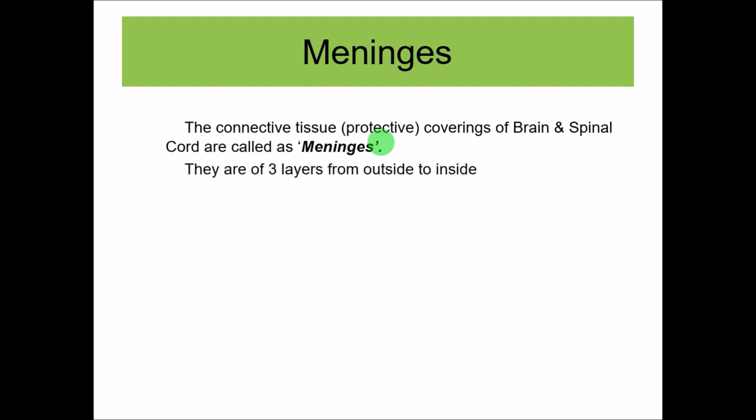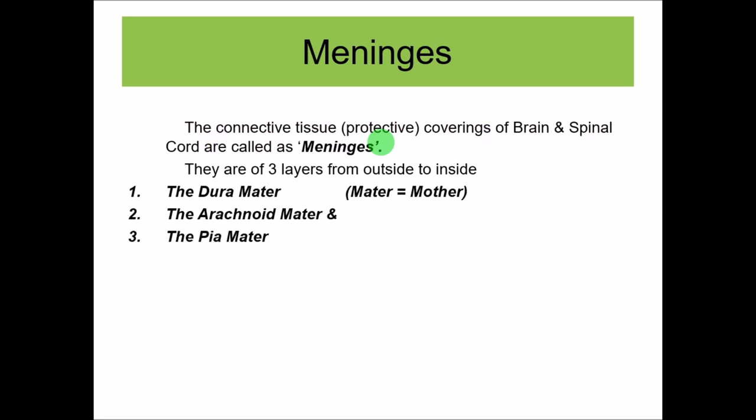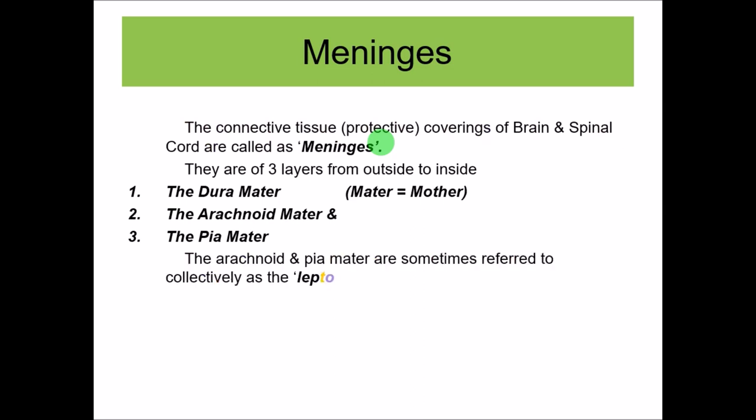The meninges are in three layers from outside to inside. The first is called the dura mater, then the arachnoid mater, and the pia mater. The word 'mater' means mother - they cover and protect the brain and spinal cord just like a mother protects her baby. The arachnoid and pia mater are usually adherent to each other and together are called leptomeninges.